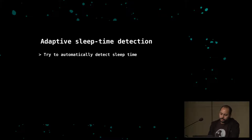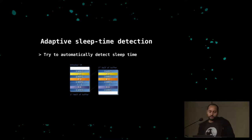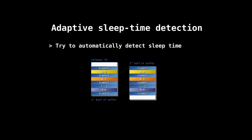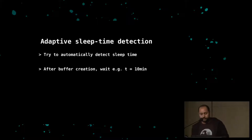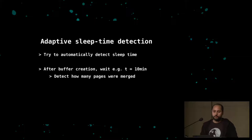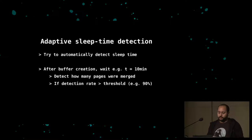We call it sleep time detection. The attacker allocates a lot of random bytes and pages, then copies every second page from half the buffer to the other half — creating many merging opportunities and giving the deduplication scheme a lot of work. After waiting a certain time (like 10 minutes), you detect how many pages were merged. If the detection rate is above a certain threshold, that's the right sleep time to use in your attacks.